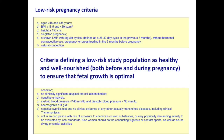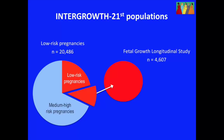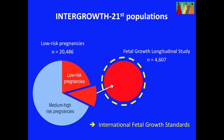Of those approximately 20,000 low-risk women, 4,607 were selected to be very closely studied for the growth of their babies across pregnancy. The main reason the full 20,000 weren't followed was fairly pragmatic — there's a limit to how many scans the research centres could perform. Women also needed to consent to quite intensive follow-up, and we had to be extremely certain of their gestational age. These babies make up the population from which the international fetal growth standards have been derived.